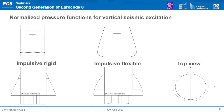The same pressure components apply due to vertical seismic excitation: impulsive rigid, impulsive flexible, and convective. For impulsive rigid, the tank moves up and down without deformation. For impulsive flexible, a breathing deformation of the tank occurs, with a very different pressure distribution, as shown in the top view at a certain height.